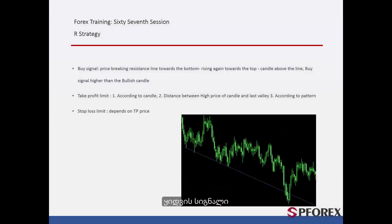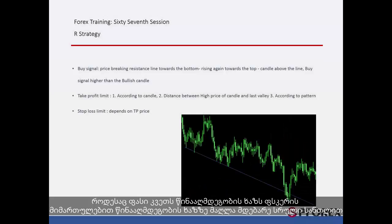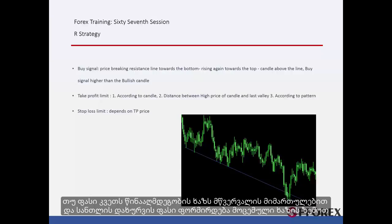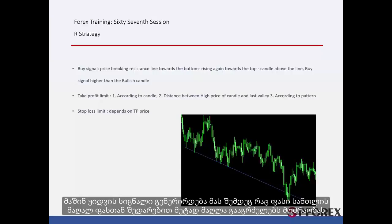Buy Signal: When price passes the resistance line towards the bottom with complete candles over the resistance line and then returns to the given resistance line, if price crosses the resistance line towards the top and the close price of a candle forms above this line, then a buy signal is generated after the price goes higher than the high price of that candle.